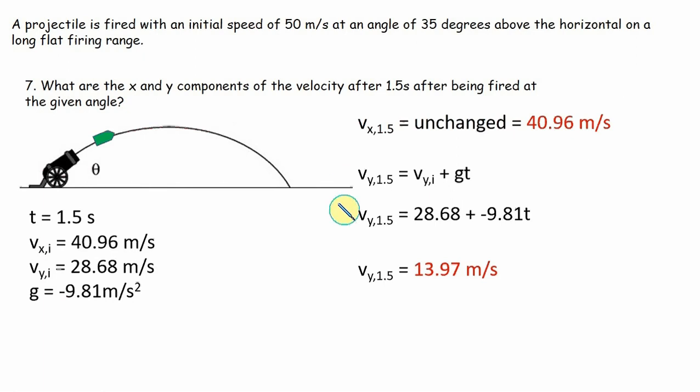That should make some sense. We know when it reaches the top, it's going zero and it's not to the top yet. So it should be somewhere between its initial speed 28.68 meters per second and its final speed zero meters per second. And sure enough, it's slowing down. It's only going about 14 meters per second or so. So easy. Same big four equations. We're just using them at different points.